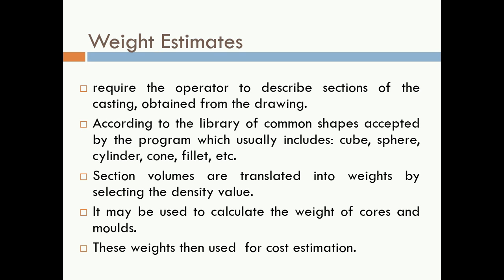The first computer application in the foundry industry is weight estimation. The operator describes the sections of the casting obtained from the drawing received from the design department. The casting may consist of cubes, spheres, rectangles, or squares — common shapes available in the program's library, which typically includes cube, sphere, cylinder, cone, and fillet shapes.